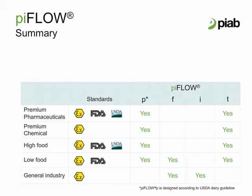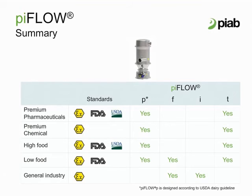This graph plots the most common industry standards and how the PIFLOW series addresses each. The PIFLOW P is our premium technology, generally used in the pharmaceutical and food industry. The PIFLOW P offers the widest selection of options and can perform at the peak of our transfer rate range. In addition, the PIFLOW P is also designed according to USDA dairy guidelines and it is FDA approved.